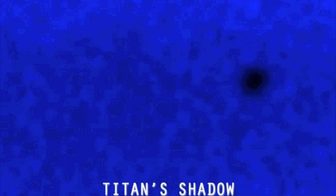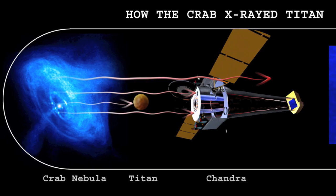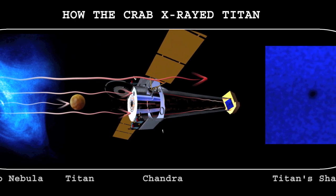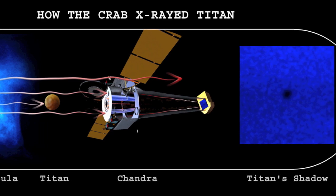Chandra essentially took an X-ray of Titan. This image allowed astronomers to measure the density of Titan's very thick atmosphere, a measurement that would have been very difficult to make any other way.